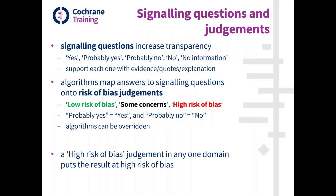Quickly, a little refresher from what was covered in the introductory session about the general structure of the tool and the signaling questions within each domain. Within each domain, ROB2 includes a set of signaling questions — reasonably factual questions about what was done or what happened in the trial, though some of them do require a bit of judgment. The possible answers are yes, probably yes, probably no, and no information. Note that these questions are phrased in the most natural linguistic way for each issue addressed, which means that sometimes yes is a good thing and sometimes no is a good thing.